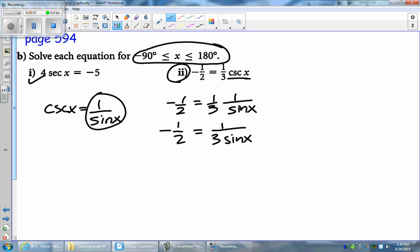Next thing you want to do is, when you solve a trig equation, you always want to try to isolate that trig ratio. So I'm going to do a cross multiplication here. I'm going to get negative 3 sine x is equal to 2. Therefore, sine x is equal to 2 over negative 3.